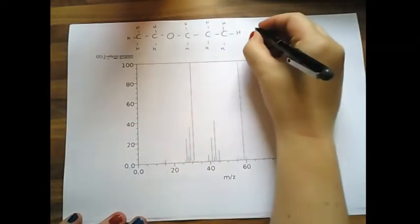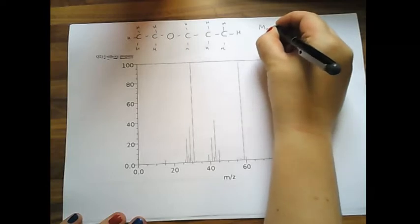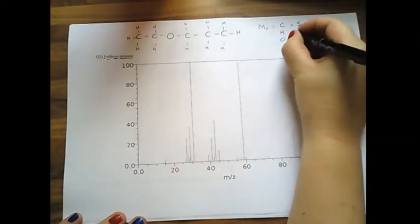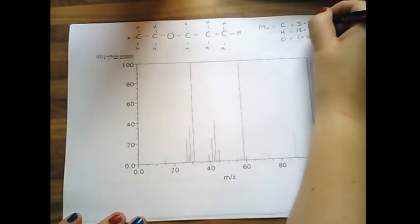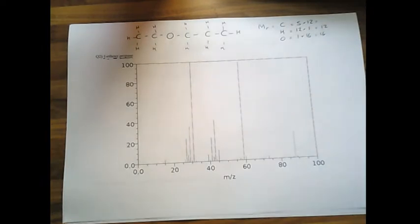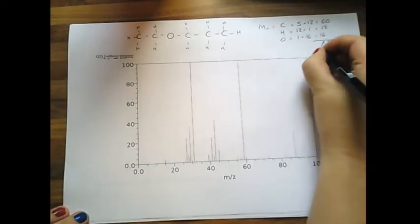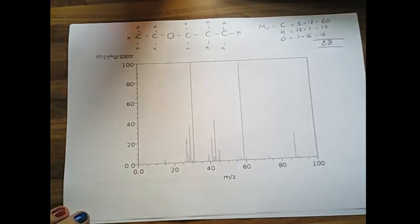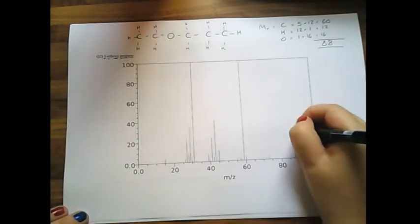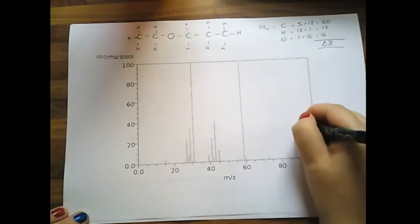Okay. Relative formula mass of this thing then. We'll get you 88 as the relative formula mass of the entire thing, which there it is. There's 88. There is a molecular ion peak.